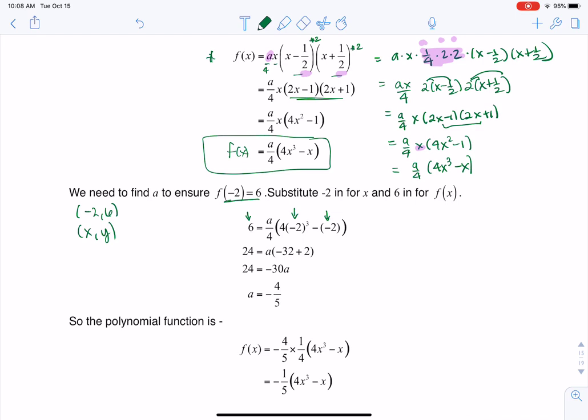So okay, great. Keep in mind where we left off, we thought f of x was equal to a over 4 times 4x cubed minus x. All right, so now if a is equal to negative 4 fifths,